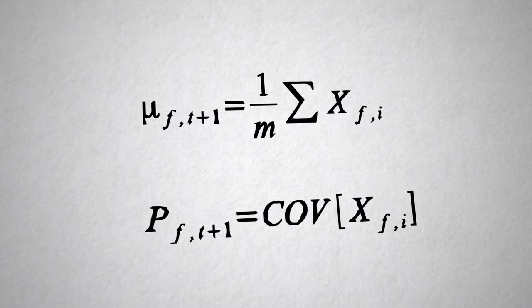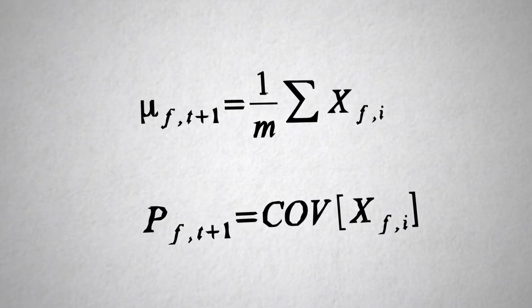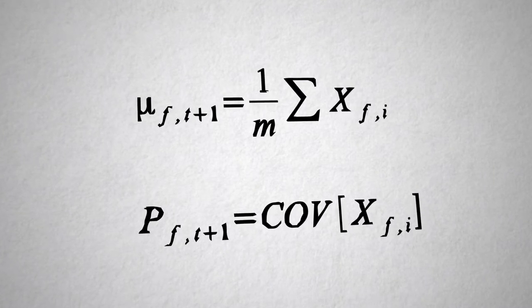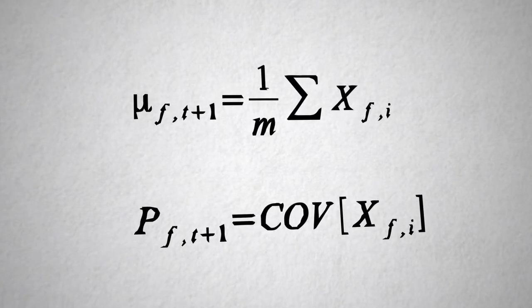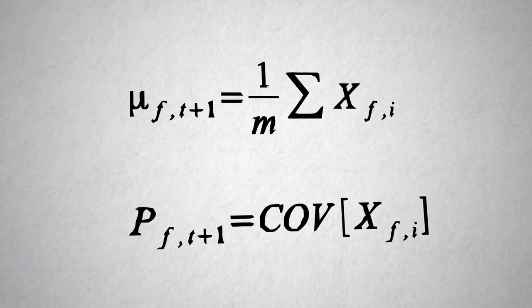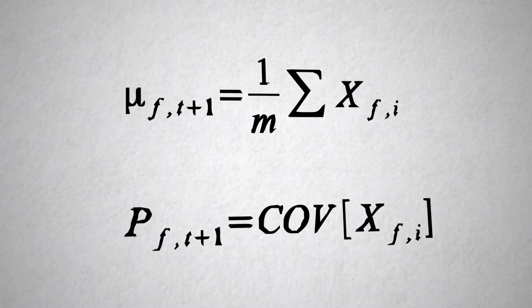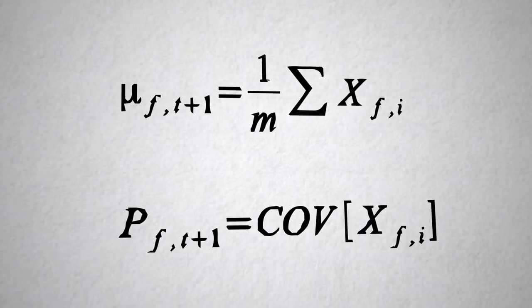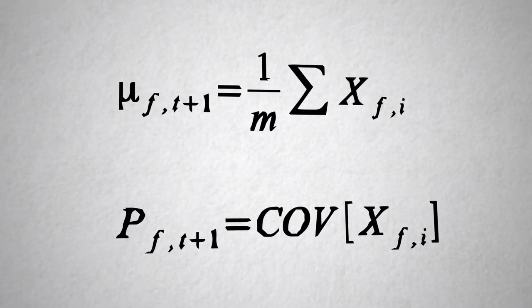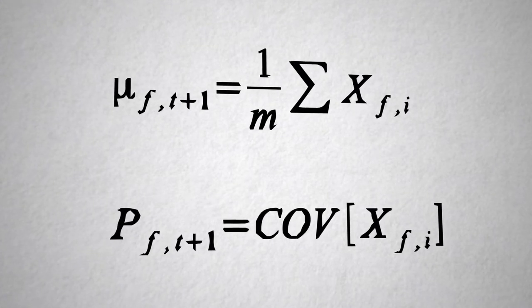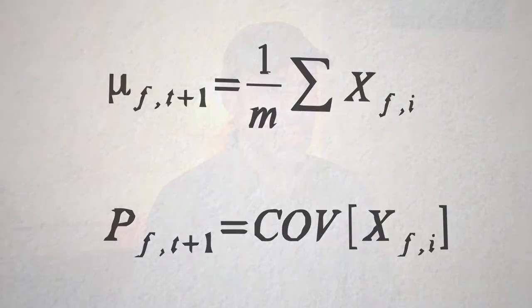Once we've fit that prior distribution to the ensemble, then that enters into the Kalman data assimilation the same way that we did in the Kalman filter and the extended Kalman filter. So we have a normal prior, we have a normal likelihood, we combine those things and we get a normal posterior. Because of its simplicity, the ensemble Kalman filter is particularly popular in ecology and has a lot of advantages.